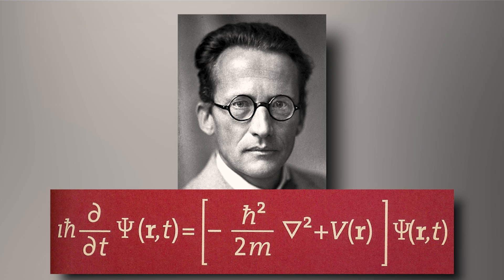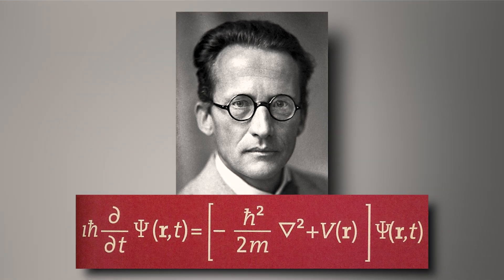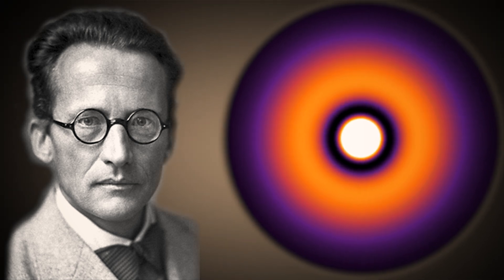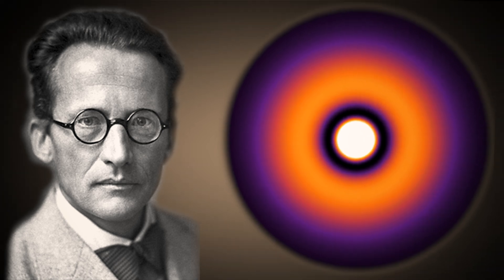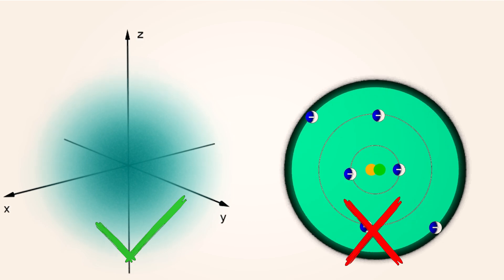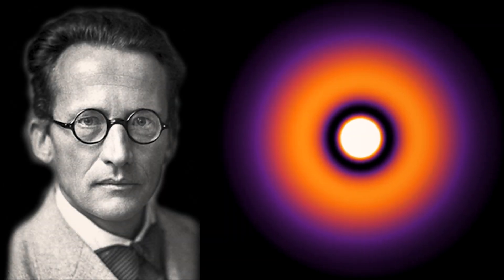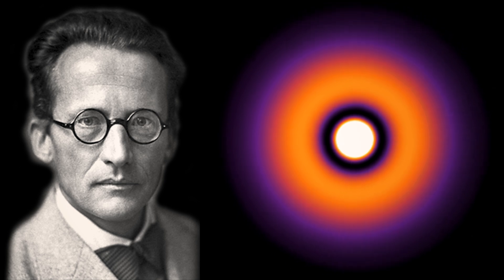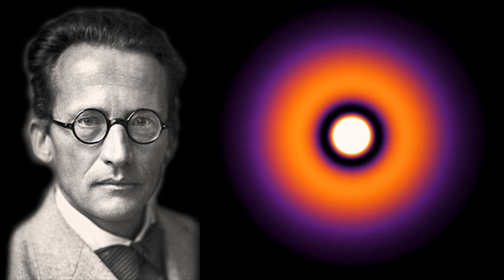Schrödinger, on the other hand, formulated a wave equation in 1926 that described the behavior of electrons as both particles and waves. The journey culminates in the 1920s with Erwin Schrödinger's development of the quantum mechanical model. This model describes electrons as existing within probability clouds or orbitals rather than fixed orbits. Schrödinger's model successfully addressed the limitations of previous models and aligns with experimental observations, marking a significant leap in the precision of describing atomic behavior.